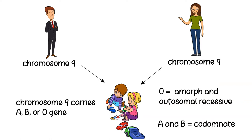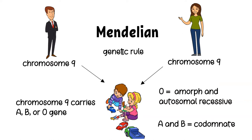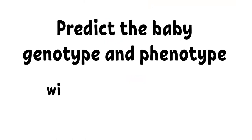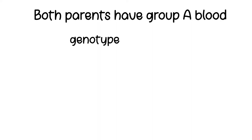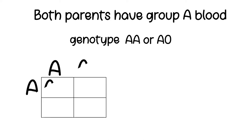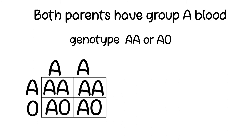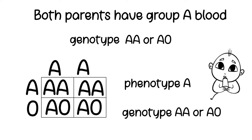The ABO genes are co-dominant and follow Mendelian genetics. We can predict the baby's genotype and phenotype using the Punnett square. If we know the parents' blood type, we can see what combinations of genotype and blood type the baby could have. If both parents have group A blood, an individual can either have AA or AO genotype to express A blood type. You can see that the baby will have phenotype A, but there are two possibilities for the genotype: either AA or AO.